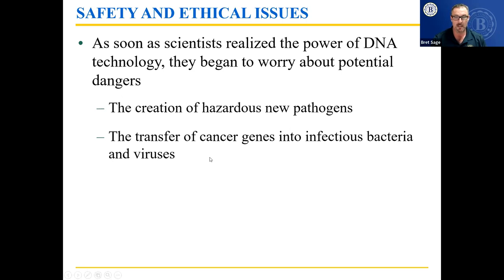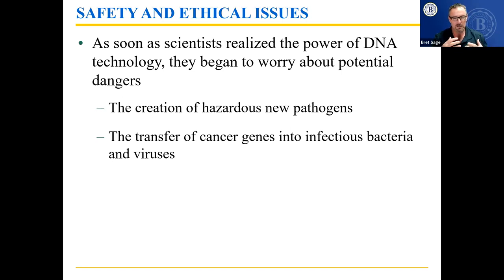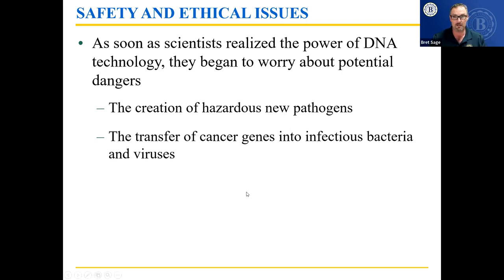The transfer of cancer genes into infectious bacteria and viruses is a concern. You can get cancer from a virus — it's called HPV. What they're starting to do now is vaccinate kids against HPV so they don't get the virus. There's been controversy about this because why would you give a vaccination to a kid way before they're going to have sexual contact? Well, you don't know when kids will have sexual contact, and in females it can lead to infertility and potentially cervical cancer and death. So more progressive parents are giving these vaccines to their kids so they don't pick up cervical cancer.